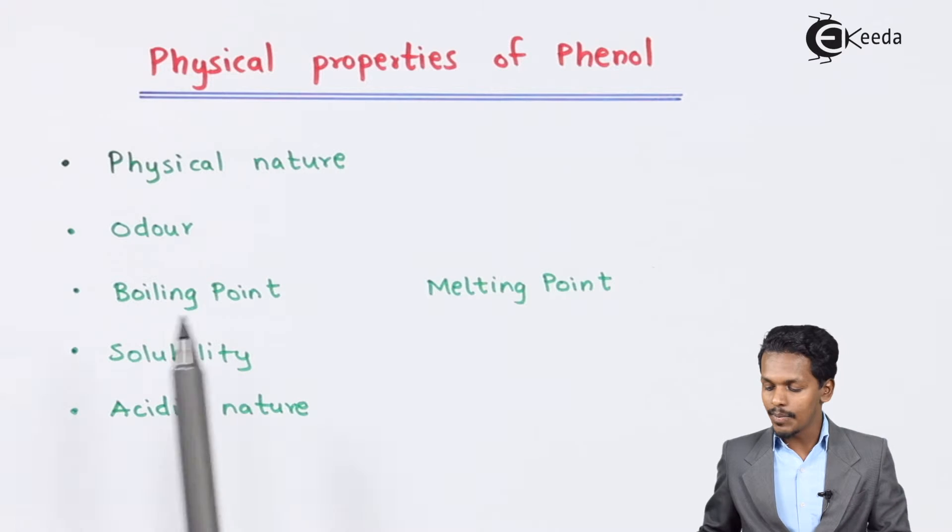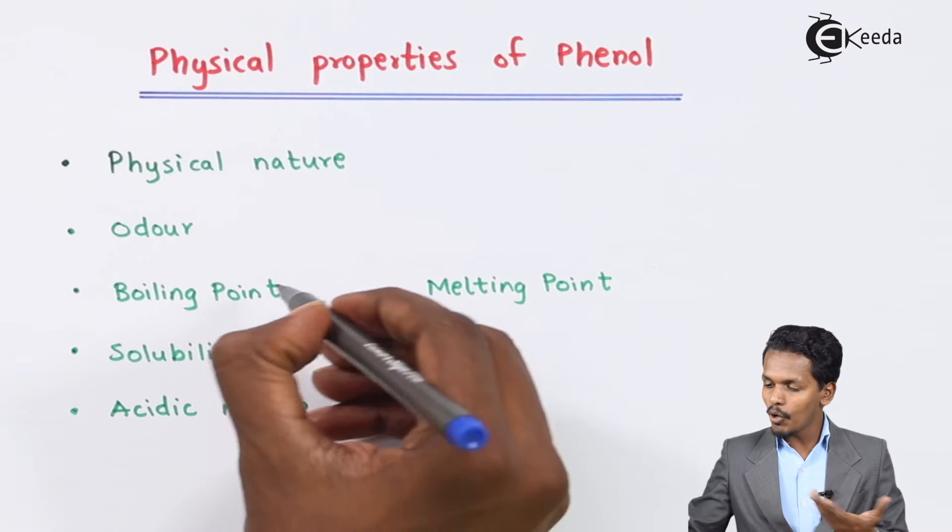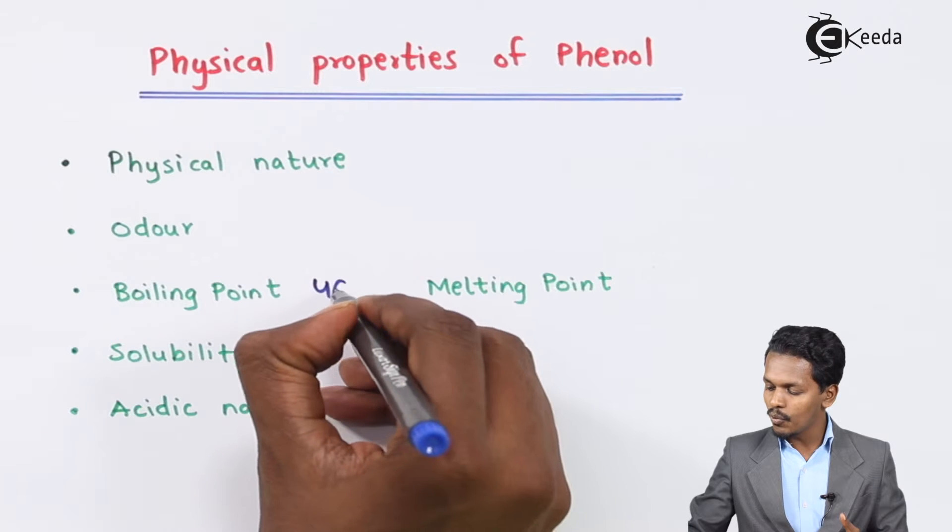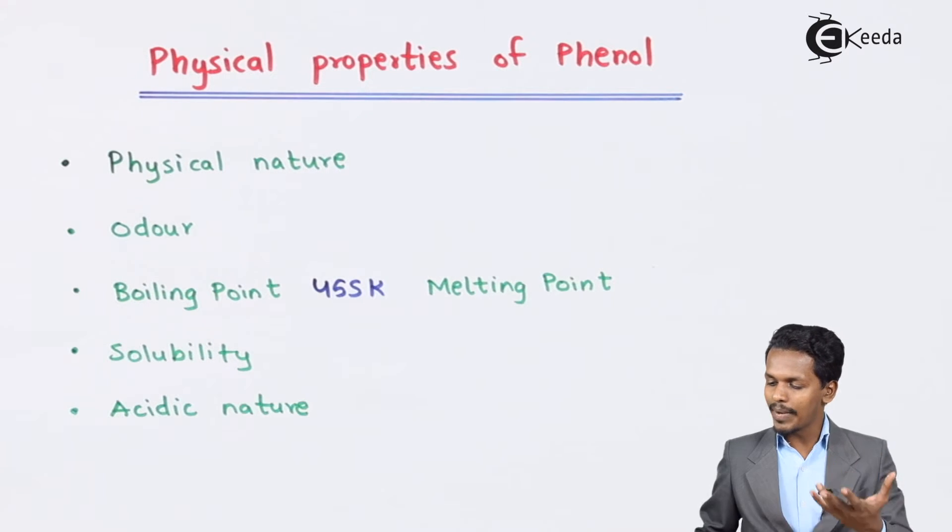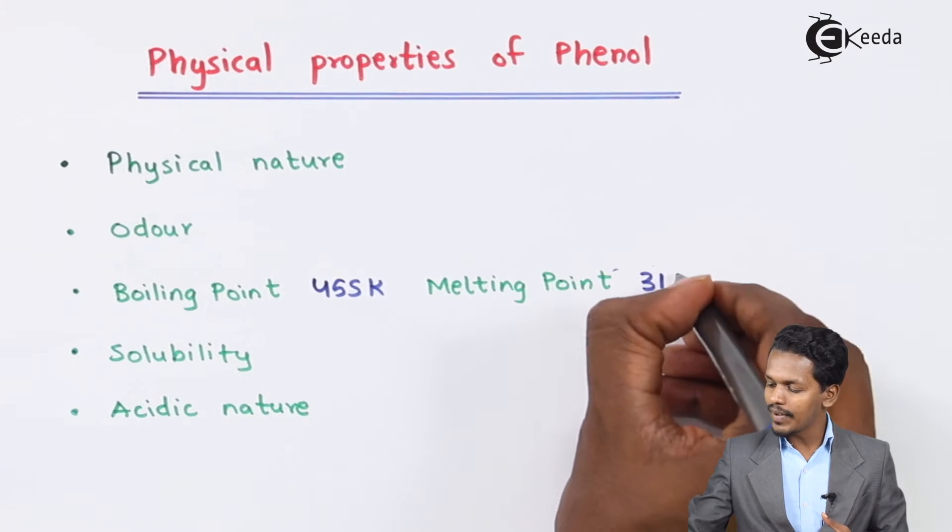And talking about the next one that is boiling point. It has been found that the boiling point of phenol is 455 Kelvin. And talking about the melting point it has been found to be 315 Kelvin.